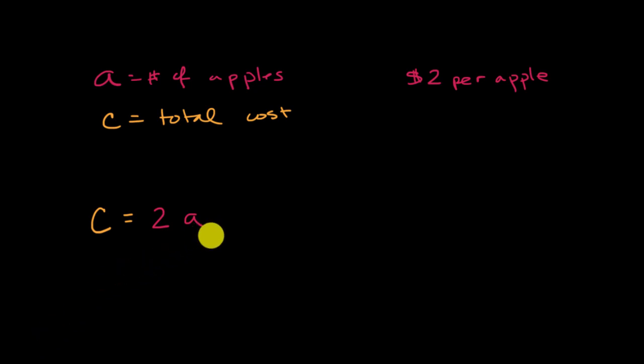Another way that we could rewrite this, if we were to divide both sides of this by two, we would get that the number of apples is equal to cost over two.